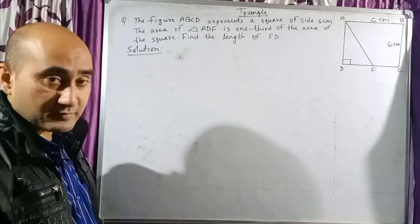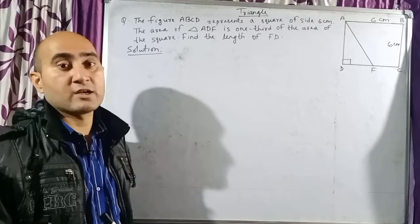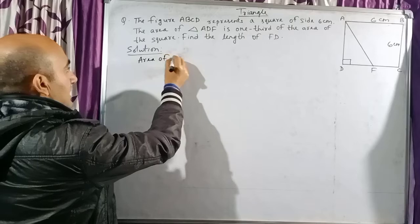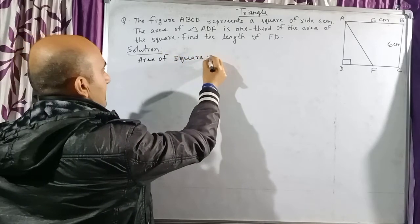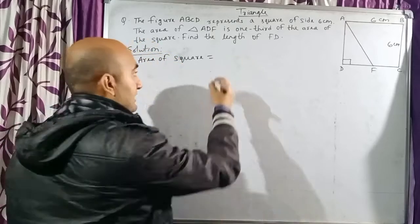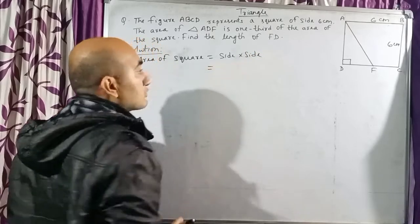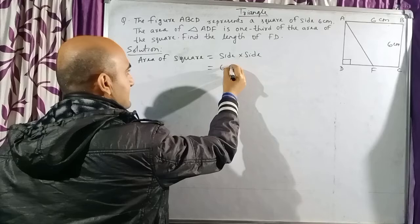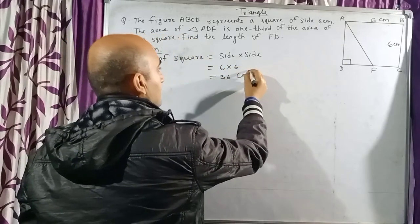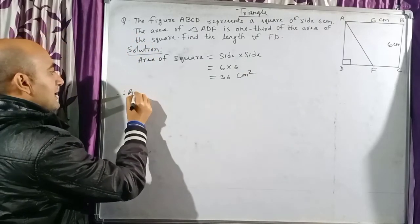The area of the right-angled triangle is connected with the area of the square, so let us begin from the area of the square. Area of square equals side into side. The side of the square is 6, so 6 into 6 equals 36 centimeters square.